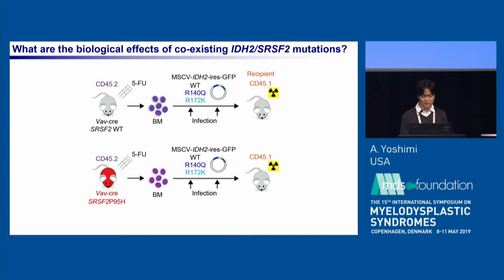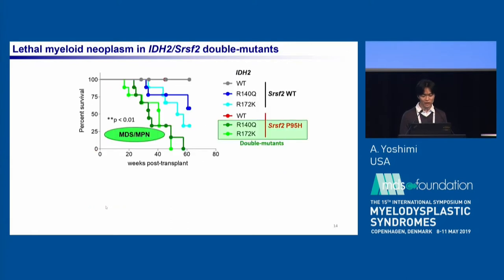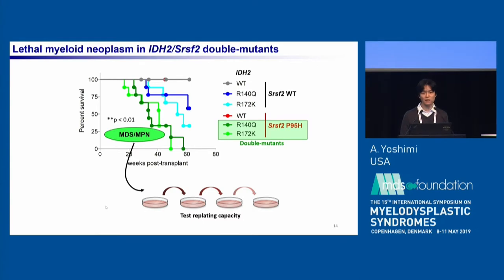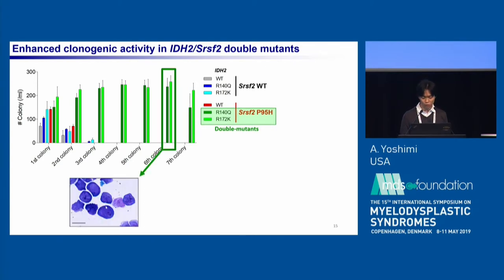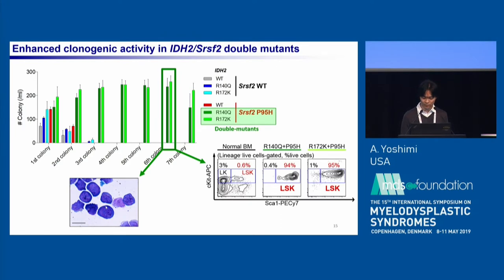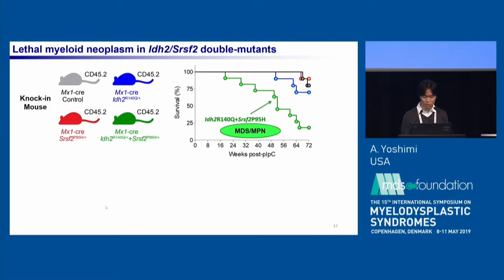To address the first question, we set up a BMT experiment using SRSF2 mutant or wild-type primary hematopoietic cells and transduced IDH2 wild-type or mutant using retrovirus, then transplanted the cells into recipient mice. As shown here in green, the double mutant mice had shorter survival compared to the other groups, developing a lethal MDS-MPN. The double mutant cells had clearly enhanced clonogenic activity with blast morphology and LSK-like immature immunophenotype, and these double mutant cells were also serially transplantable.